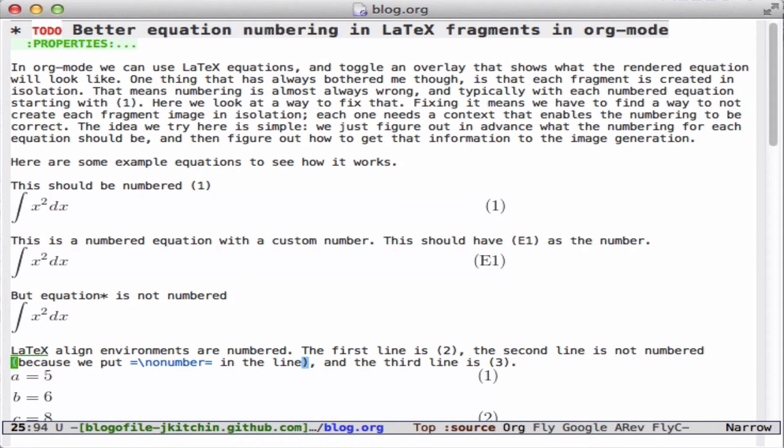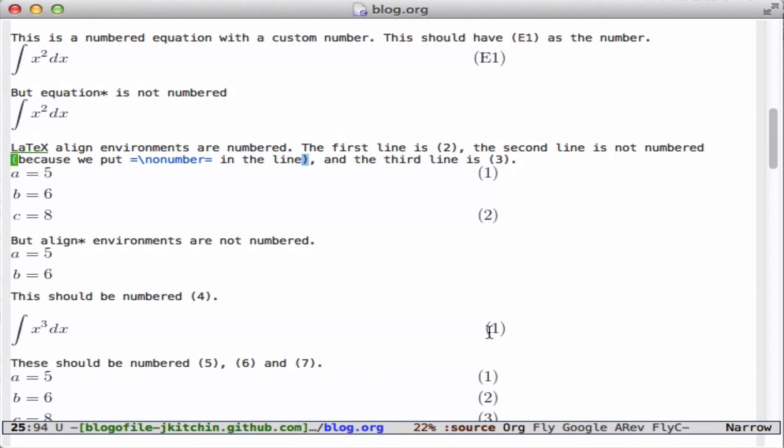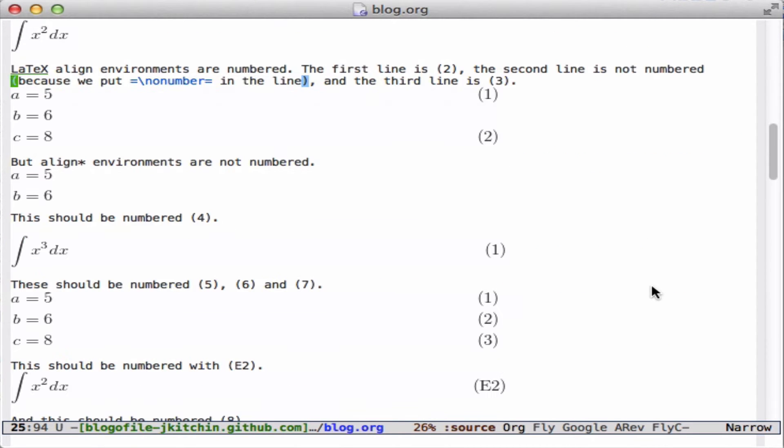All right, we're looking at equations today and how they get numbered in org-mode. So here I have an equation, it's labeled 1, and here we use a custom tag to change that. But if we have another equation down here, it's also labeled as 1 or numbered that way. In fact, all of them are. They all start at 1, which is confusing when you lecture.